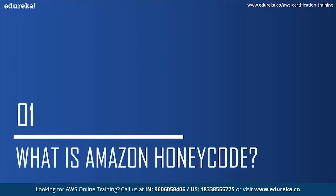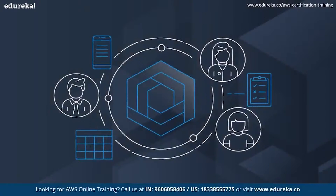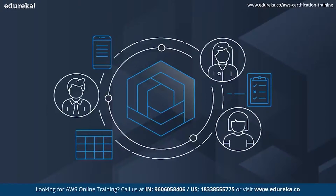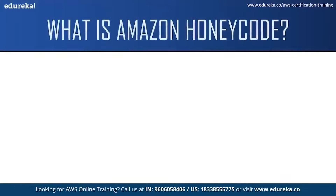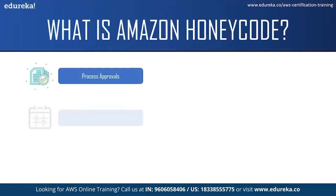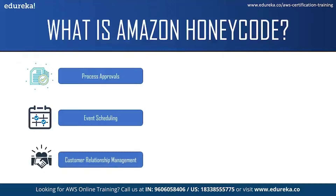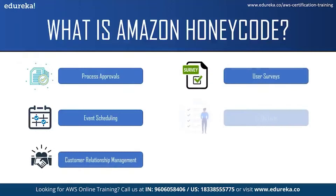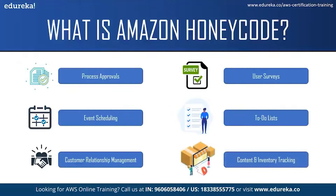Amazon Honeycode is a fully managed service that allows individuals to quickly build powerful mobile and web applications. It can be used to track and manage things like process approvals, scheduling, customer relationship management, user surveys, or as simple as making a to-do list or content and inventory tracking. Users no longer have to rely on error-prone methods like emailing spreadsheets or hiring developers to build costly custom applications.